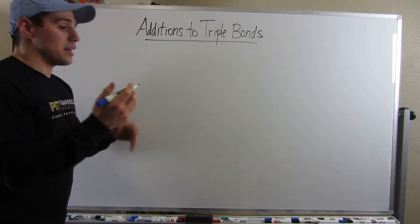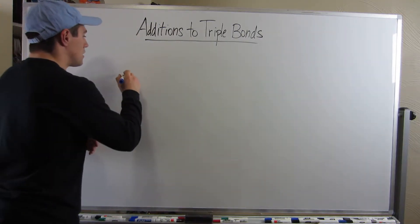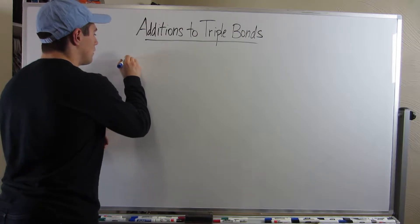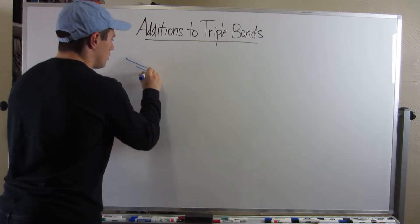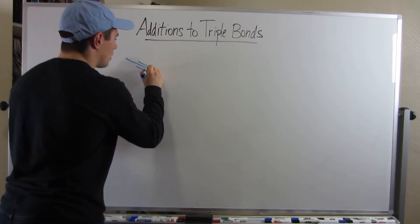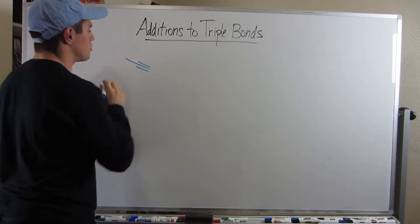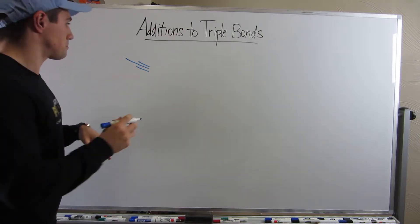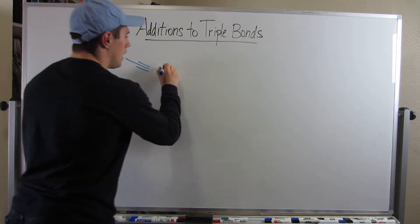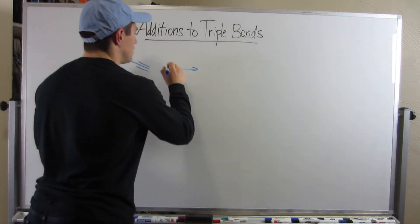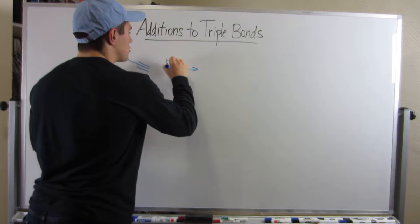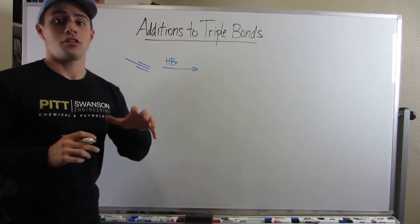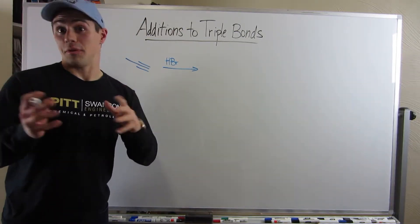So let's just jump right in. Let's look at a three-carbon alkyne — propyne. And let's do a reaction. Maybe we just throw in some HBr, just a Markovnikov addition of HBr.